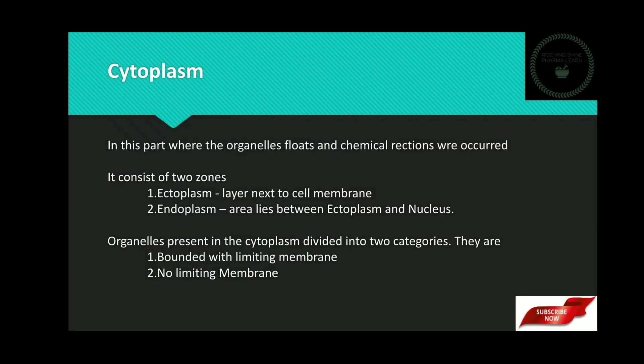Next, cytoplasm. It is the second major part present in the cell. In this part, organelles float and chemical reactions occur. It consists of two zones: ectoplasm and endoplasm. Ectoplasm is a layer next to the cell membrane. Endoplasm is an area which lies between the ectoplasm and the nucleus. Organelles present in the cytoplasm are divided into two categories: those bounded with a limiting membrane, and those with no limiting membrane. The limiting membrane is an outer cover similar to that of the cell membrane.